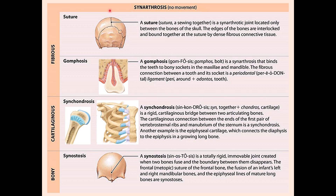Synarthrosis is a functional classification for joints that are not movable. Histologically, they are subdivided into fibrous, cartilaginous, and bony types. Fibrous synarthroses divide into sutures and gomphoses. Sutures are found between the flat bones of the skull — they interlock like a saw and are connected by dense irregular connective tissue. Sutures are non-mobile joints, distinct from sutural bones, which are simply located within sutures.